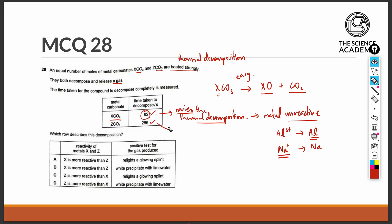And Z, that took a longer period of time to decompose, must have been more reactive than X. Therefore, Z will be more reactive than X. Options A and B will be out.